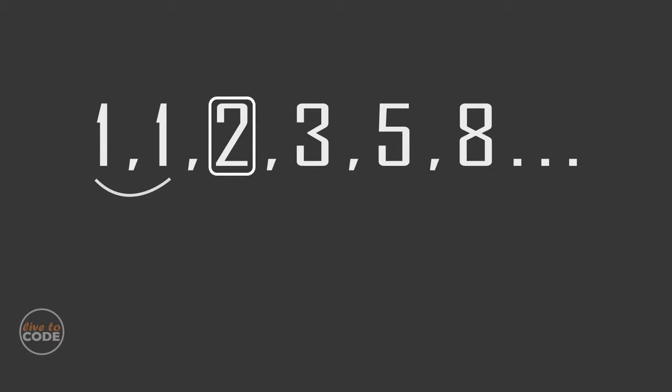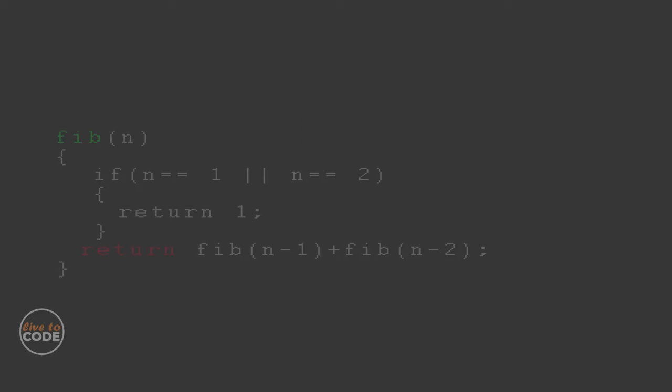Each number in the Fibonacci series is the sum of two preceding numbers. If we add 1 and 1, we will get 2. If we add 1 and 2, we will get 3. If we add 2 and 3, we will get 5. And so on.